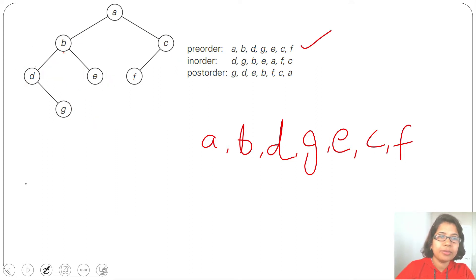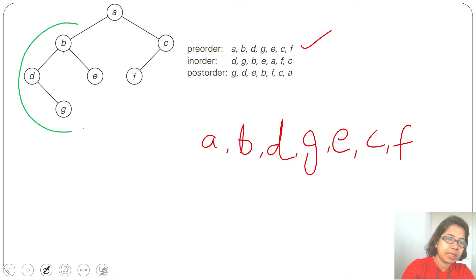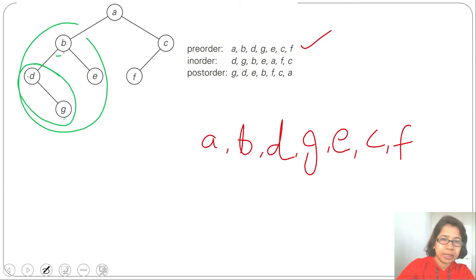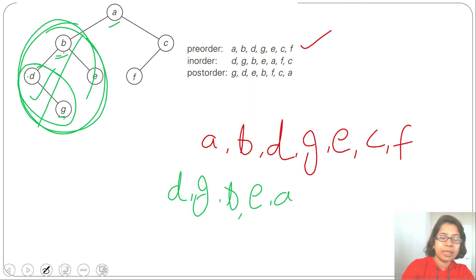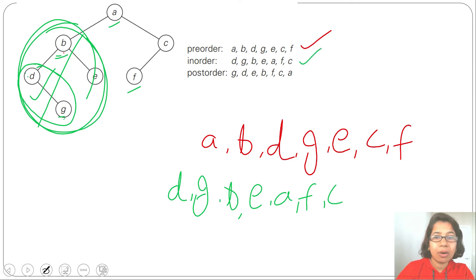Next, in-order means left, root, right. We go to the left subtree. For B, its left subtree has D and G. In in-order: D has no left child, so we visit D, then G. Now that part is done; we visit B, then right child E. Left part complete — we visit root A. Now in the right subtree we visit left, root, right: so F first, then C. In-order traversal: D, G, B, E, A, F, C.